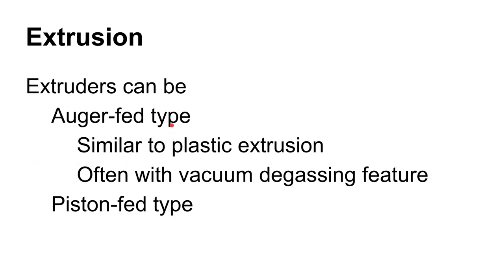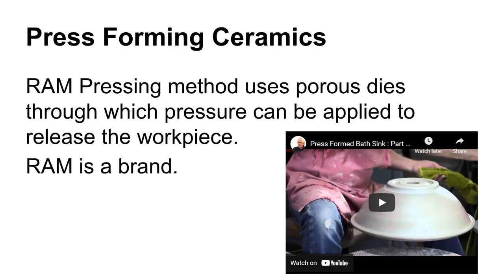One way to shape clay material is with an extruder. As with aluminum or plastic extrusion, ceramic extrusion works well for parts with a constant cross-section that are very long relative to their width. There are two types of ceramic extrusion machines: auger-fed and piston-fed.